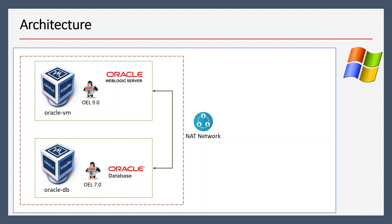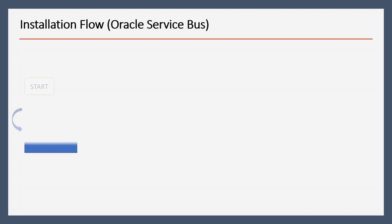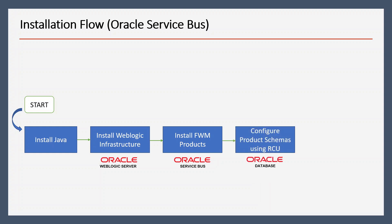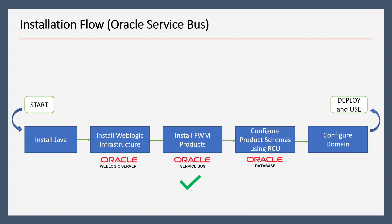In this video we are going to install Oracle Service Bus in machine number one. For OSB installation, we will first require Java, then we need the WebLogic Infrastructure. After that we can install FMW products — in our case it will be Oracle Service Bus. Then we will configure product schemas using RCU, and finally we can configure the domain. We will also see how to create a cluster.